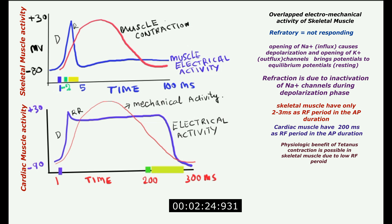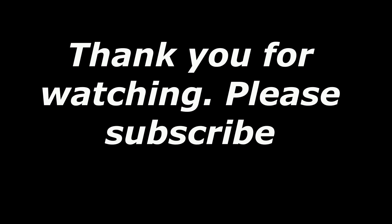That is why the inactive sodium channels do not respond to subsequent stimuli — the cardiac muscle cannot undergo tetanic contraction. Tetanic contraction is not safe for cardiac muscle activity. In skeletal muscle, tetanic contraction can occur because the refractory period covers only about two to three milliseconds of the entire action potential.